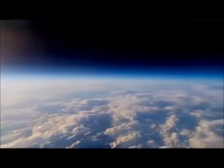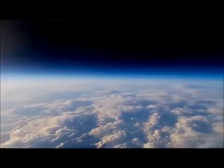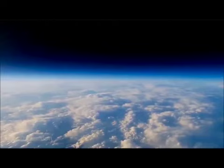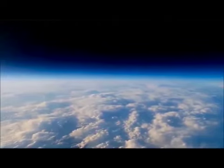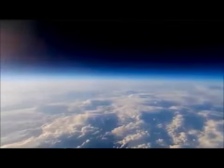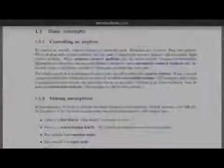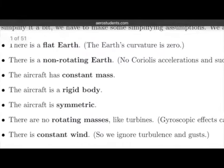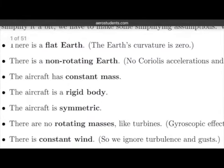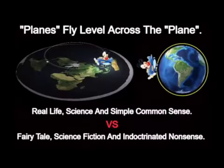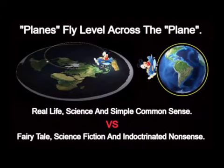Proof 15: If the Earth were truly a sphere 25,000 miles in circumference, airplane pilots would have to constantly correct their altitudes downwards so as to not fly straight off into outer space. A pilot wishing to simply maintain their altitude at a typical cruising speed of 500 miles per hour would have to constantly dip their nose downwards and descend 2,777 feet over half a mile every minute. Otherwise, without compensation, in one hour's time, the pilot would find themselves 31.5 miles higher than expected.